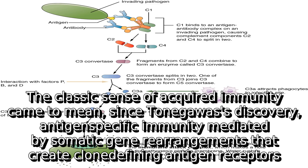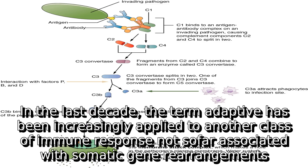The classic sense of acquired immunity came to mean, since Tonegawa's discovery, antigen-specific immunity mediated by somatic gene rearrangements that create clone-defining antigen receptors. In the last decade, the term adaptive has been increasingly applied to another class of immune response not so far associated with somatic gene rearrangements.